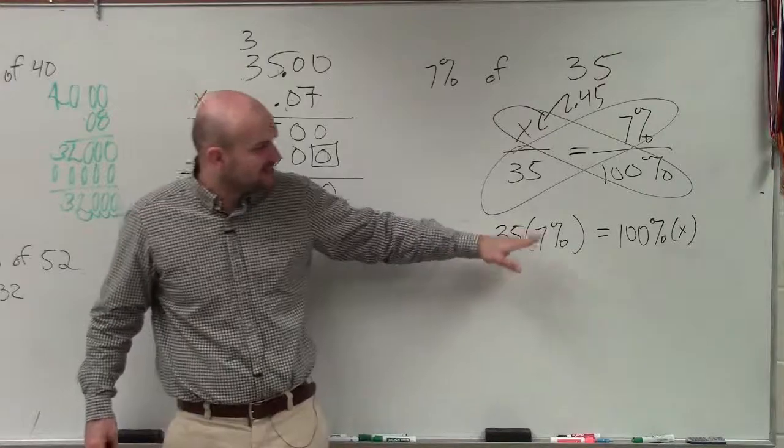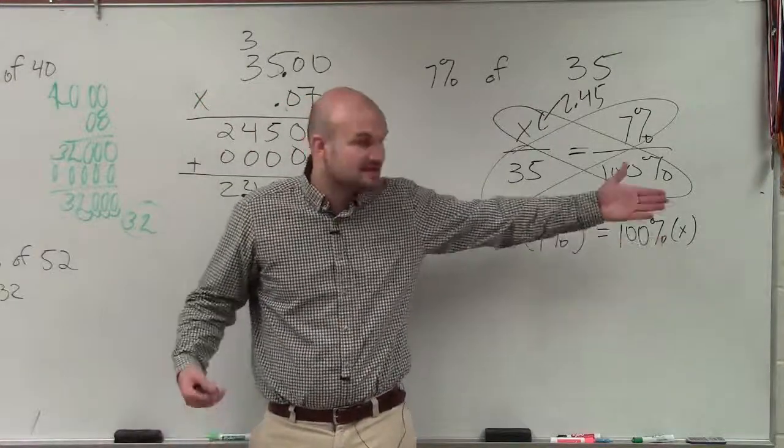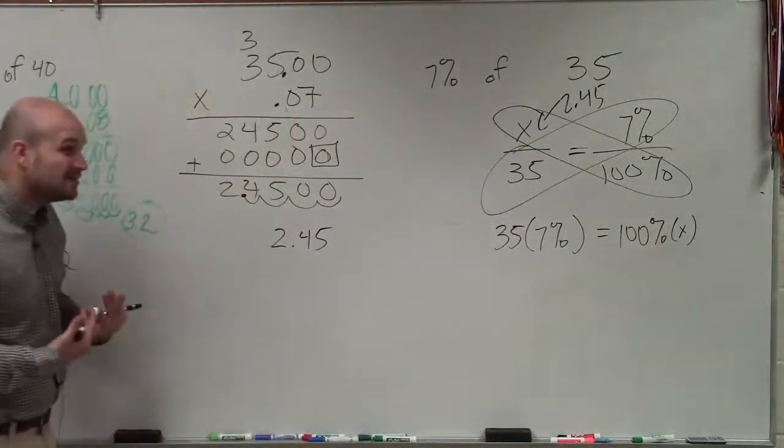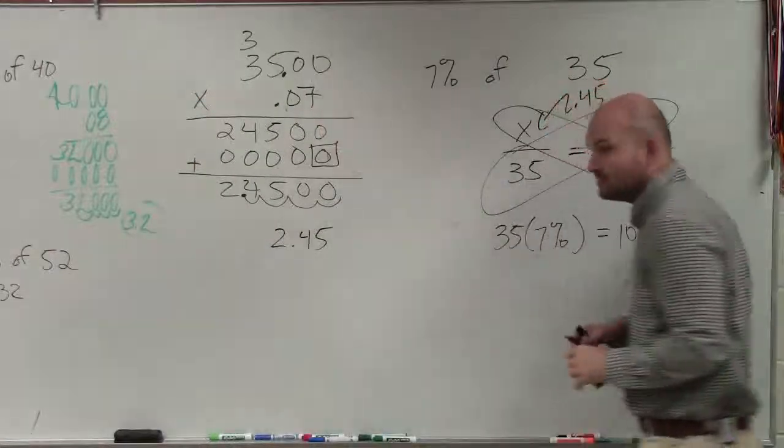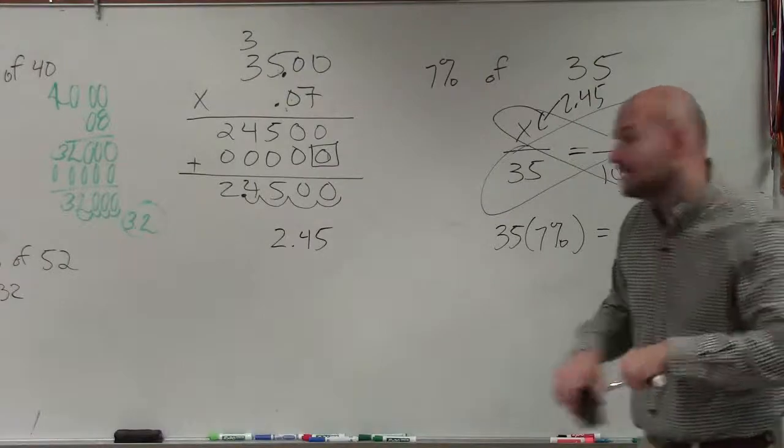You have 35 times 7% equals 100%. Now, which might have been a little bit easier as far as multiplying, I had you guys convert your 7% to a decimal and multiply across. But let's look at it a different way.